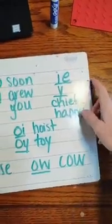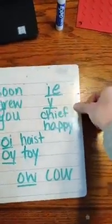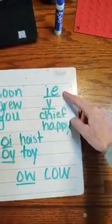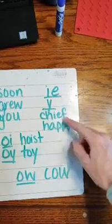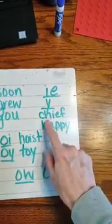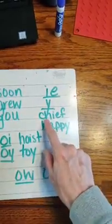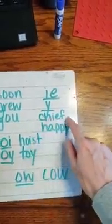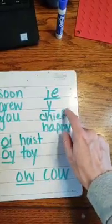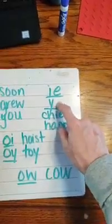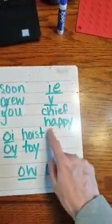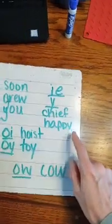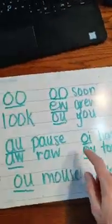Let's do these — we worked on these last week. What sound? Eee. Yes. Let's blend this word. Word. Good job — chief. What sound? Yes, eee. What word? Happy. Happy, good job.